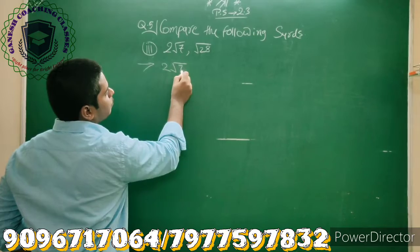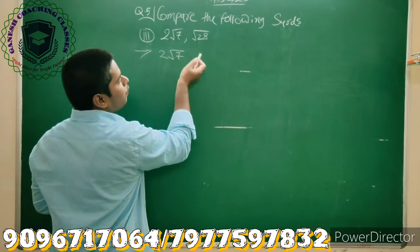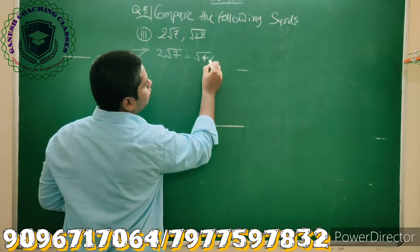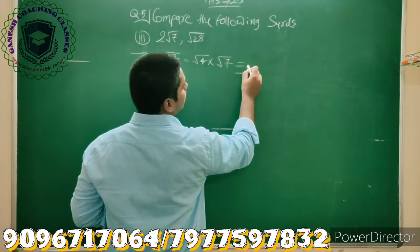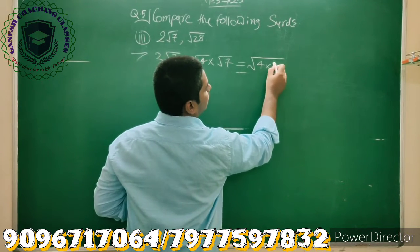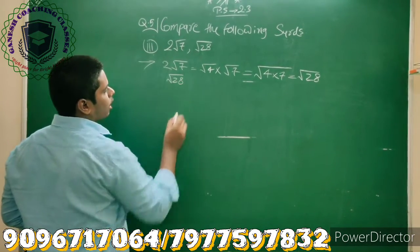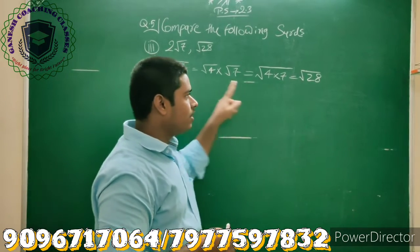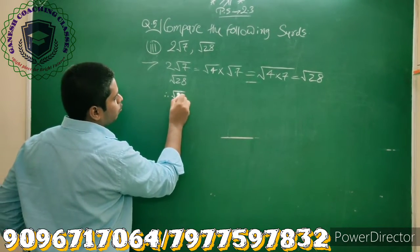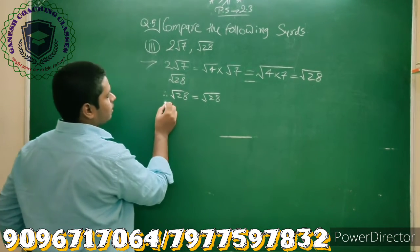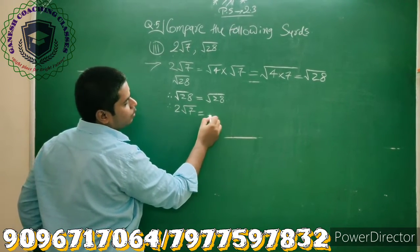In the first, we have given 2√7. Now, 2 can be written as √4, because square root of 4 is 2. So we can write 2√7 as √4 × √7. Both are square roots, so we can combine them in a single root: √(4×7) = √28. In the second, we are also given √28. So which is greater? Both are the same. Therefore, √28 = √28, meaning 2√7 = √28.